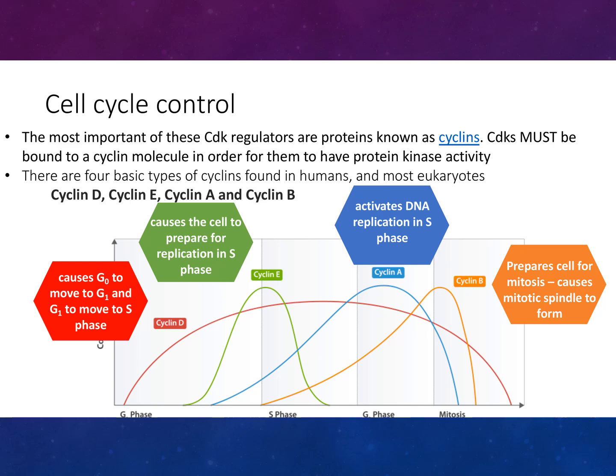Cyclin-D causes the cell to move from G1 to G2 and then to the S phase. Cyclin-E causes the cell to prepare for replication in the S phase. Cyclin-A activates DNA replication in the S phase. Cyclin-B prepares the cell for mitosis and causes mitotic spindles to form.